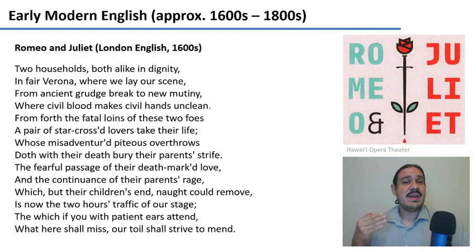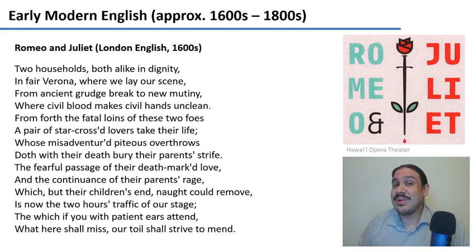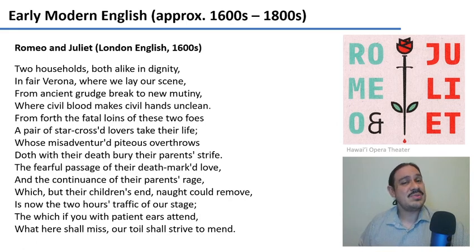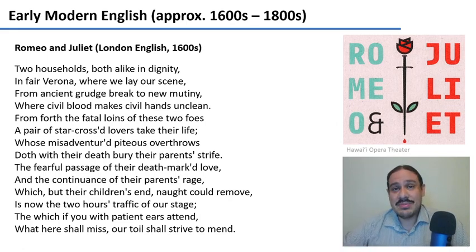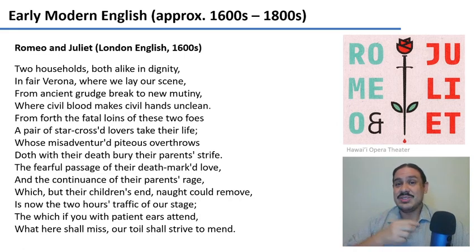Let's only travel back four hundred years in time, to the sixteen hundreds. This is starting to look a little bit more like our English. This is the beginning of Romeo and Juliet: 'Two households, both alike in dignity, in fair Verona, where we lay our scene,' and so forth. You will understand most of this. You probably don't need a dictionary to understand it, whereas with Old English we could understand almost nothing.